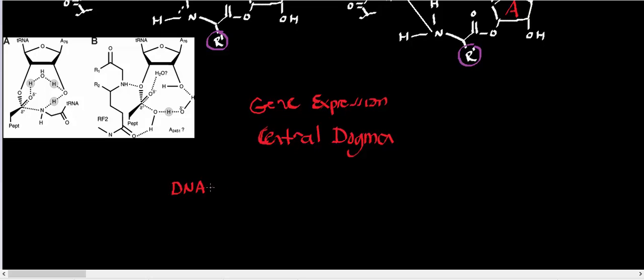We start with the DNA and through a process referred to as transcription, which I've labeled as one, we have the capacity to make a molecule, which is a polymer of nucleotides known as RNA.